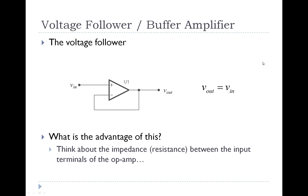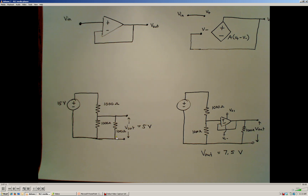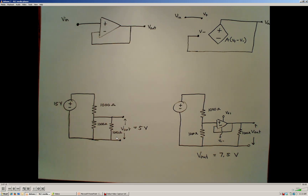The next op amp circuit we're going to look at is called the voltage follower, or the buffer amplifier, and it's configured in the following way. If we have an input voltage, we're going to place that input voltage at the non-inverting terminal of the op amp, and then connect the inverting terminal with a wire to the output terminal of the op amp. Now let's use the abstraction model to derive the output voltage with respect to ground for this device.